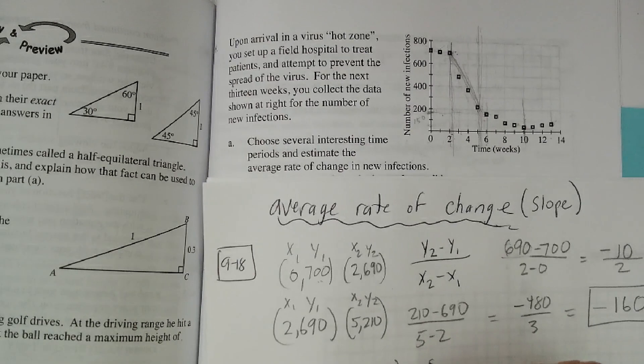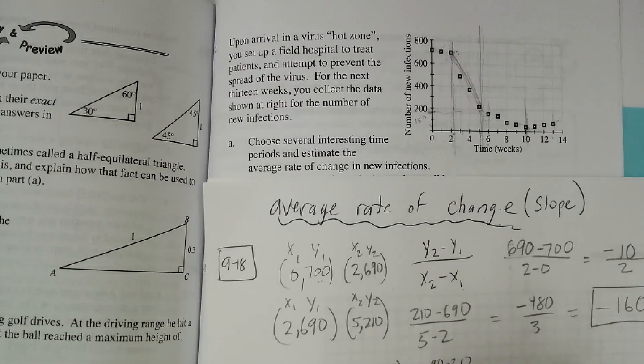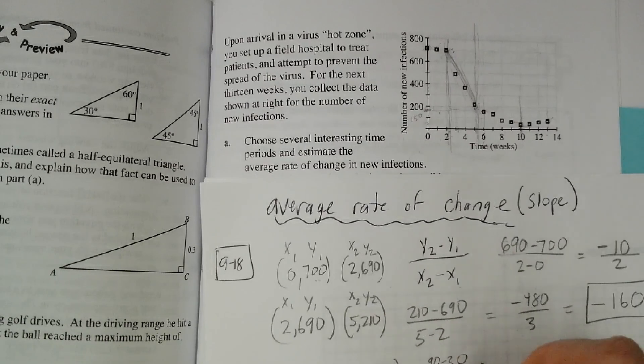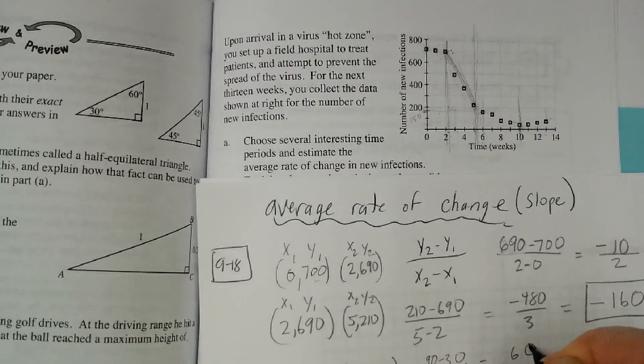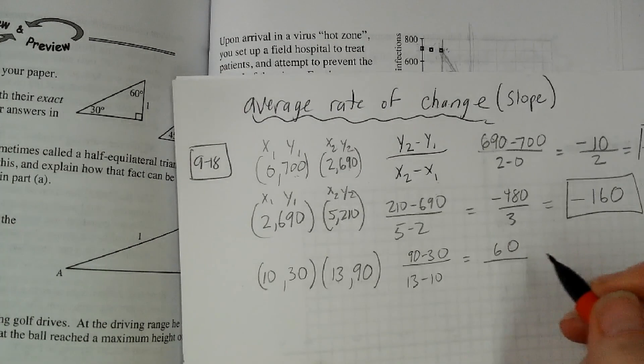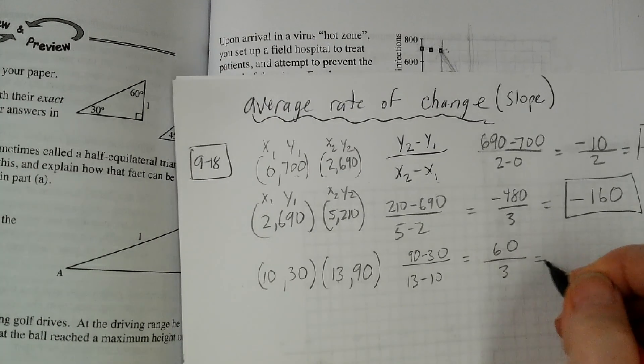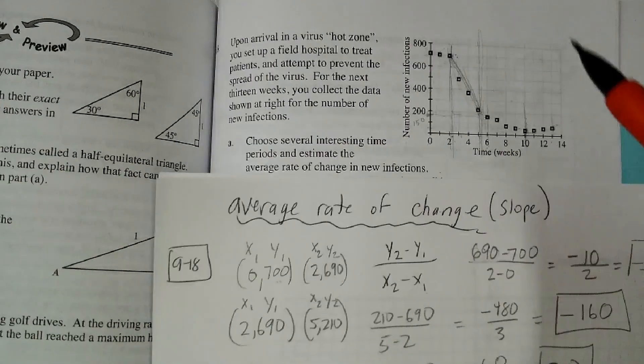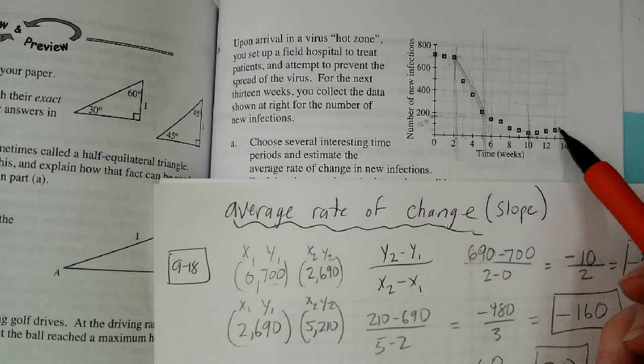And 13 minus 10. And that's going to be 60 over 3. And that's going to be 20. And it actually went up by 20 cases from this little interval. So all these are just finding the slope.